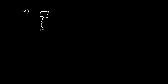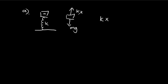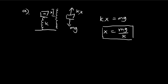In part a, we have a block and a spring, and we need to find how much the spring has been compressed. It has a mass m and a spring constant k, so all we have to do is balance the forces. There's a gravitational force and the outward force from the spring kx, where x is the amount of compression. By balancing the forces, we see that x is equal to mg over k. This is the answer to part a.